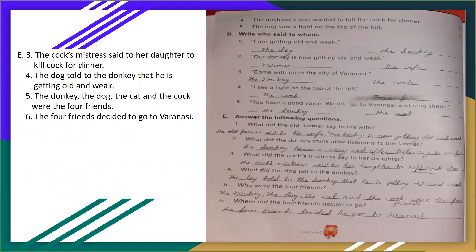Third, what did the cock's mistress say to her daughter? Cock ki malkin apne beeti se bolta hai ki hum log isse kill karenge dinner ke liye. Fourth, what did the dog tell to the donkey? Dog donkey se kya bolta hai? The dog told to the donkey that he is getting old and weak. Dog bolta hai donkey se ki wo boodhha aur kamzor ho chuka hai.